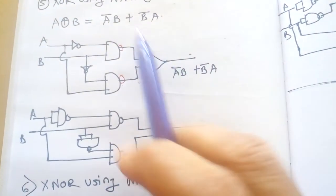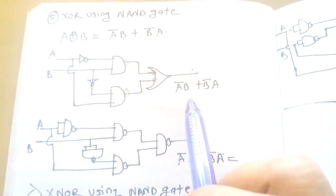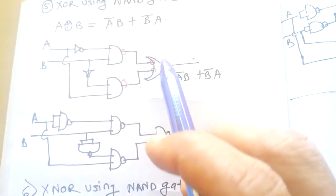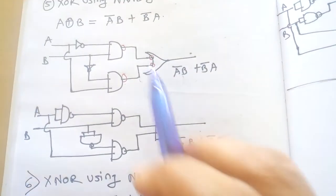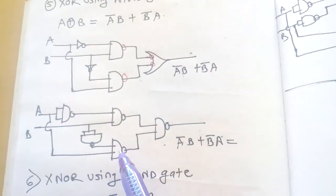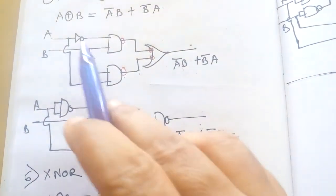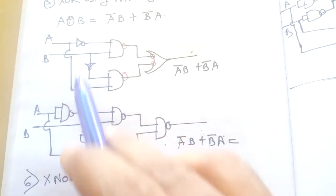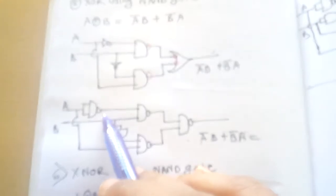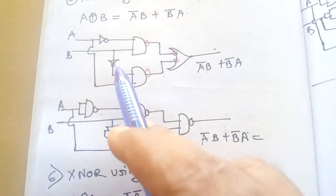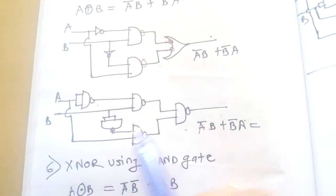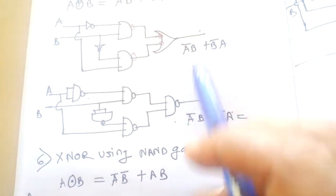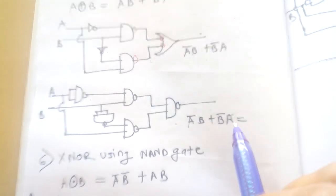Introduce two bubbles on each AND gate input line — adding two NOTs has no effect on the output. This converts each AND-with-bubbles into a NAND gate, and the remaining bubbles are replaced by NAND-as-NOT gates. This diagram implements A bar·B plus B bar·A, giving us the XOR gate using only NAND gates.